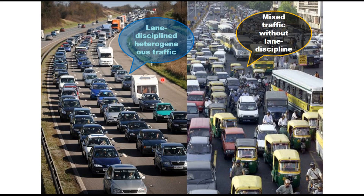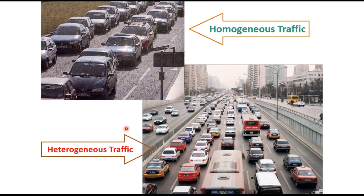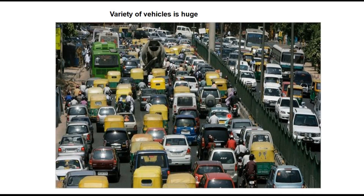If you see the lane discipline in heterogeneous traffic conditions in western countries compared to mixed traffic without lane discipline, see the difference here. One thing we should realize is that traffic in all countries including the US and Europe is of mixed nature, but the degree of heterogeneity varies from one country to another. This is homogeneous traffic of all cars, and this is heterogeneous traffic where very few heavy vehicles exist and 98 percent are passenger cars.